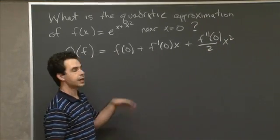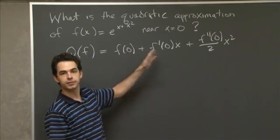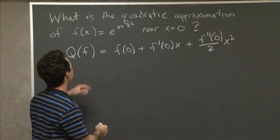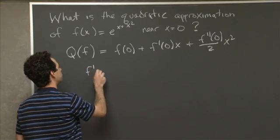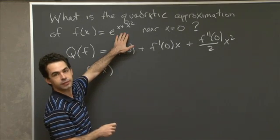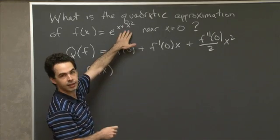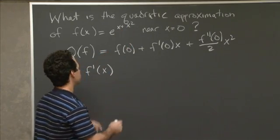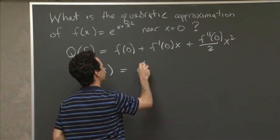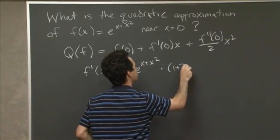All right, so in order to use this formula, we just need to know what the derivatives of our function are and their values at 0. So first we can do the first derivative of f. For that, it's just a straightforward application of the chain rule. Our outer function is e^x, and our inner function is x + x². So the derivative, applying the chain rule,